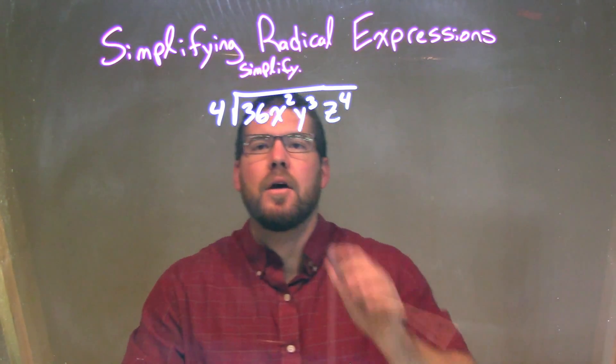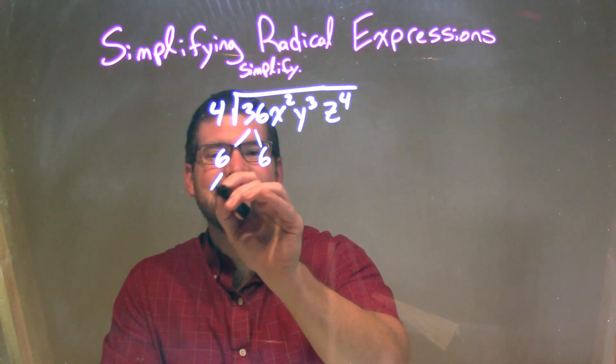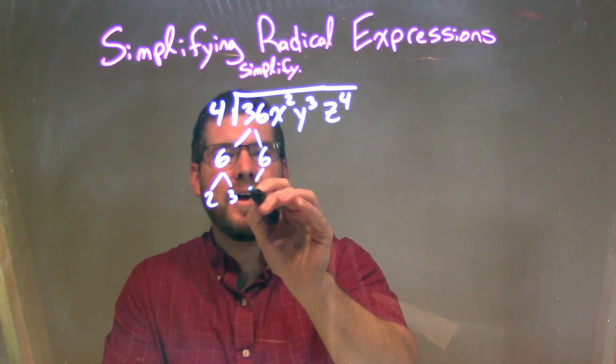I'm going to break this down. All right, 36 is just 6 times 6, and each 6 here is 2 times 3, and 3 times 2.